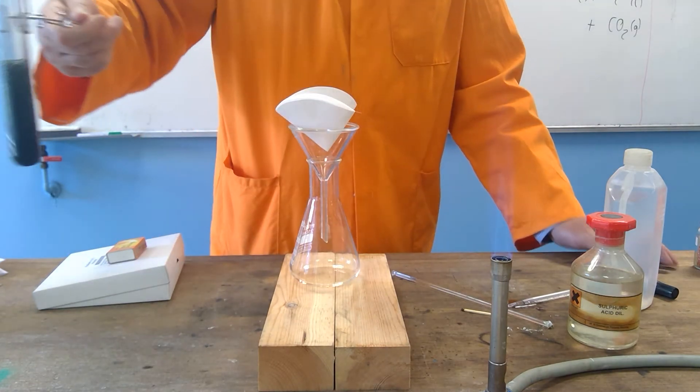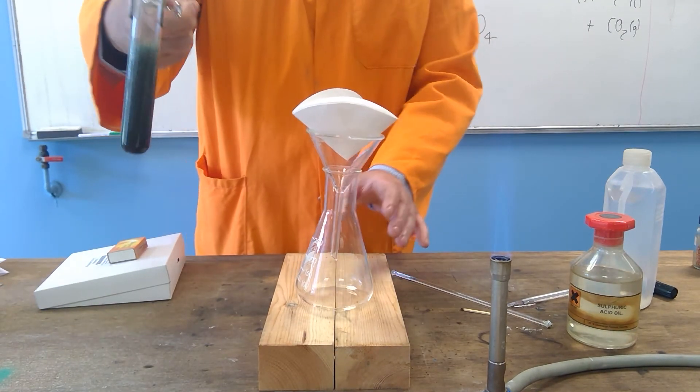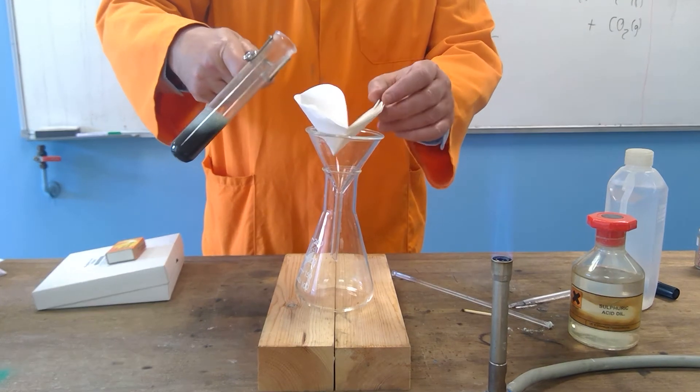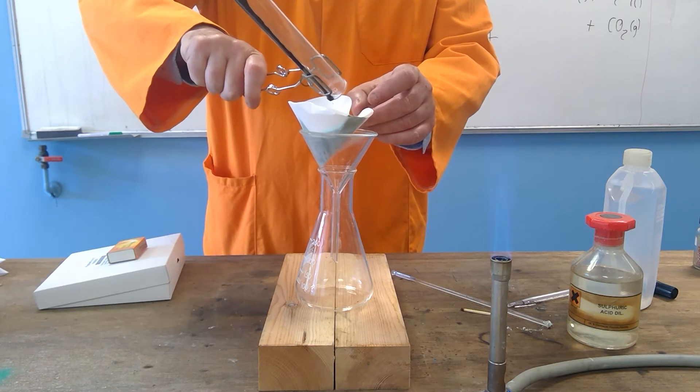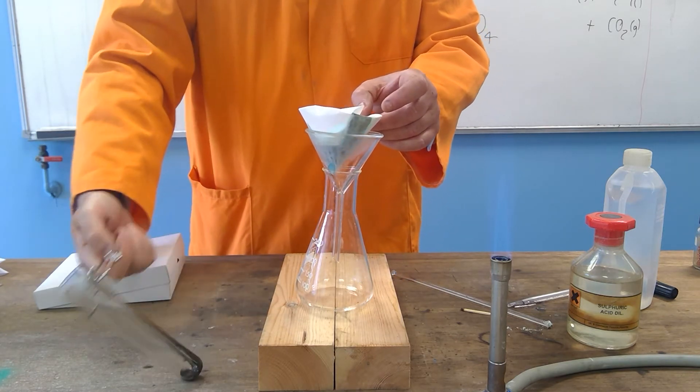So what I'm going to do is I'm going to now filter it, because it's difficult to see the colour, through filter paper into a conical flask. It takes a while to filter.